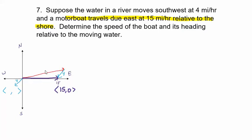Let's name the boat-heading vector b, the water vector w (the blue one), and the actual path of the boat vector a (the purple one). So vector b — which is where the boat would have to be steered and the power you'd have to give the boat — plus vector w, which is how the water is affecting the boat, is going to result in the actual path of the boat given by vector a.